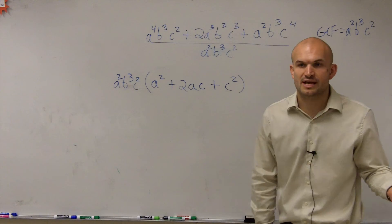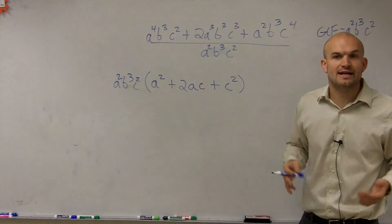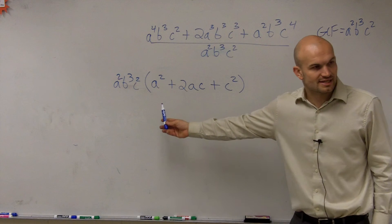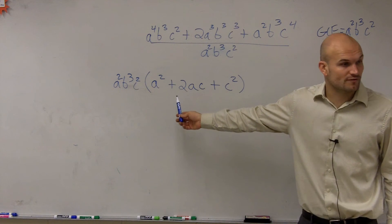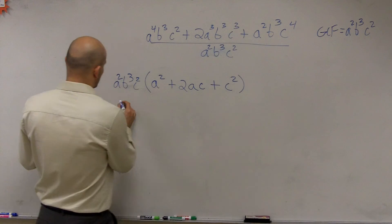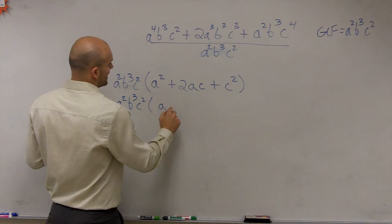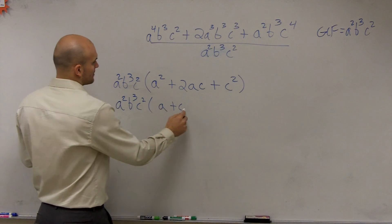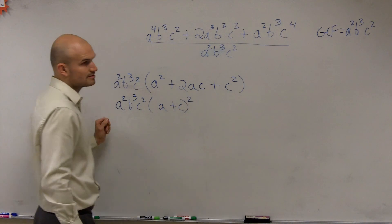So now we factor out our GCF. And you always want to look into, once you factor out a GCF, can you factor it anywhere further? Well, what we notice is this is - I'm sorry, not difference of squares - this is a perfect square trinomial. So you can rewrite this as a perfect square trinomial as a plus c times a plus c, which would be a plus c squared.